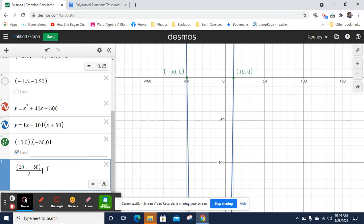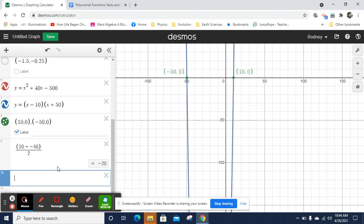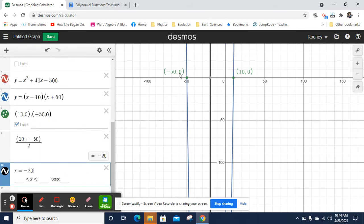And that will be the x value for the axis of symmetry. So let's actually do that. x equals negative 20. And it makes a nice line that goes right down the middle of that.